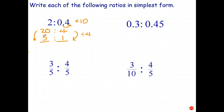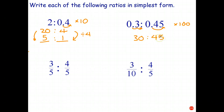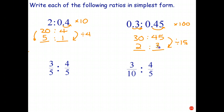For the second one I have two decimal places in each number, so I multiply both by 100. That gives me 30 is to 45. I know that 15 goes into each of those, so I divide by 15: 30 divided by 15 is 2, and 45 divided by 15 is 3. The simplified ratio is 2 is to 3.